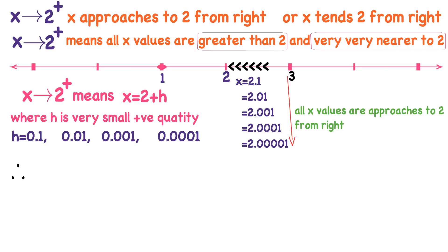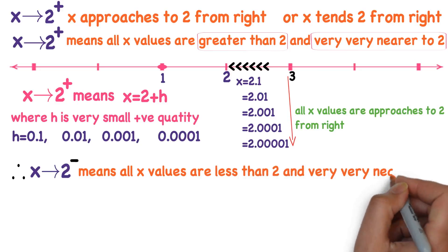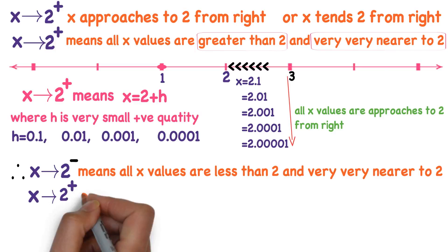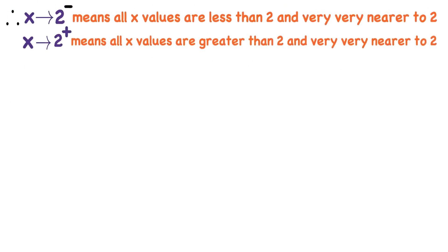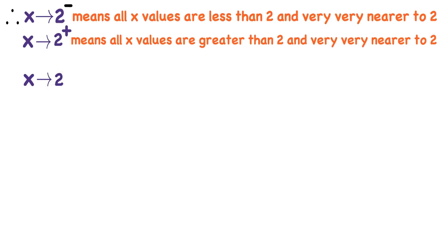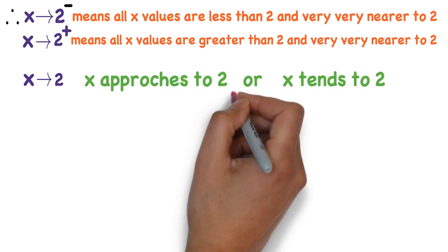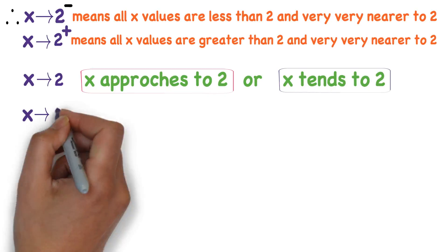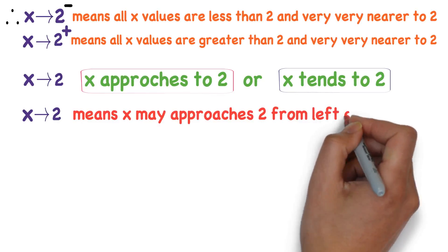So what we have learned: x approaches to 2 from left means all x values are less than 2 and very very nearer to 2. X approaches to 2 from right means all x values are greater than 2 and very very nearer to 2. And x approaches to 2 — with no left or right symbol — means x may approach to 2 from left or right.